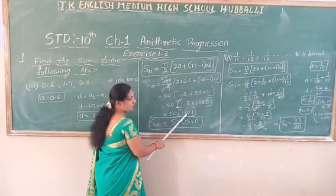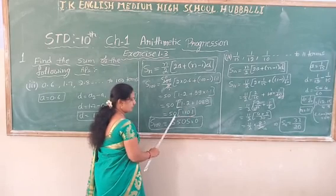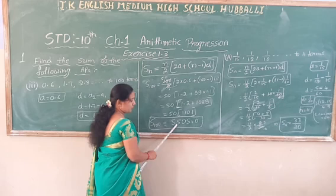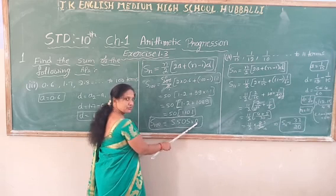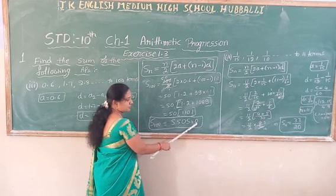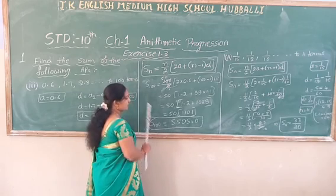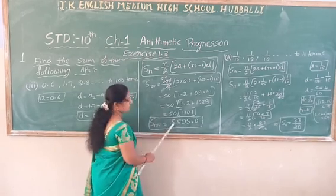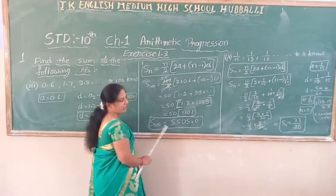So 50 into 110.1 — multiply these two — you are going to get 5505.0. The answer, the sum of 100 terms of this AP, is 5505.